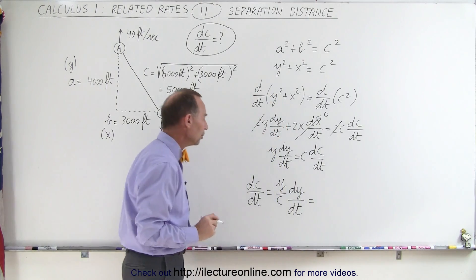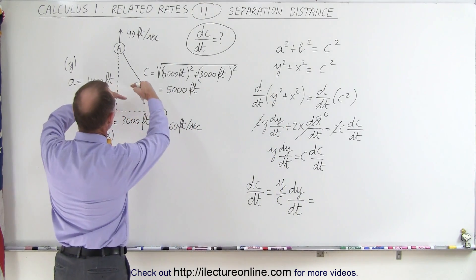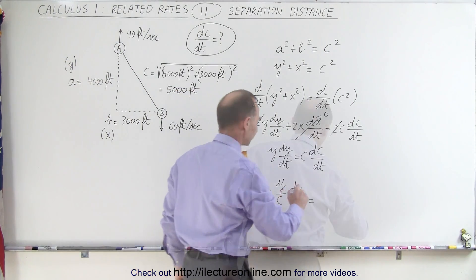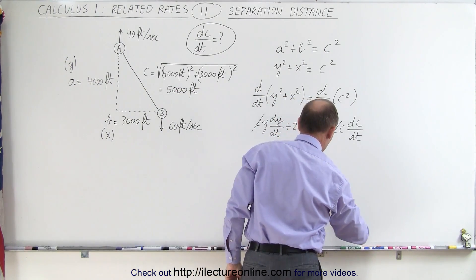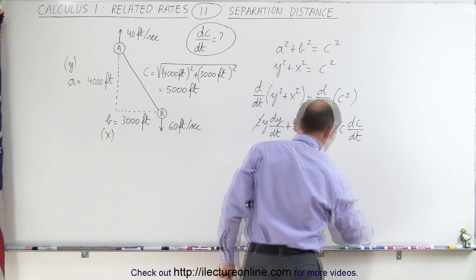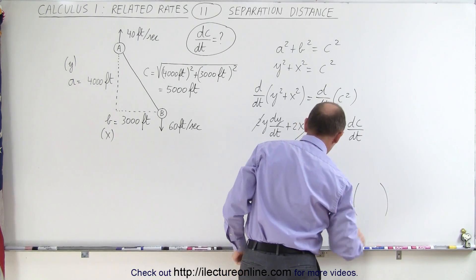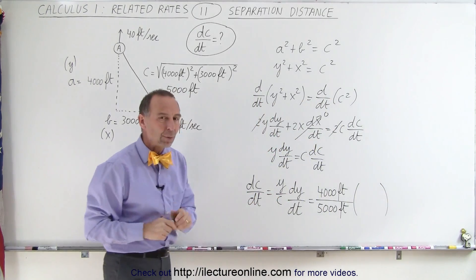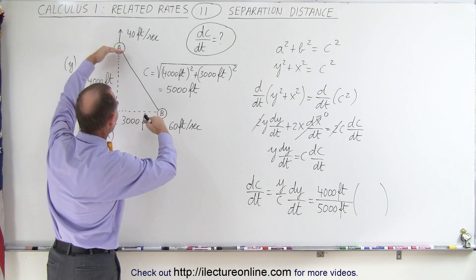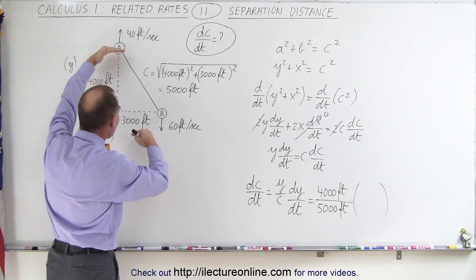All right, let's plug in what we know. Y, that would be the separation distance in this direction, is 4,000 feet. C is the diagonal distance between the two objects, which is 5,000 feet. And now the change in Y with respect to time. We're looking for the change in the distance between A and B in the Y direction.